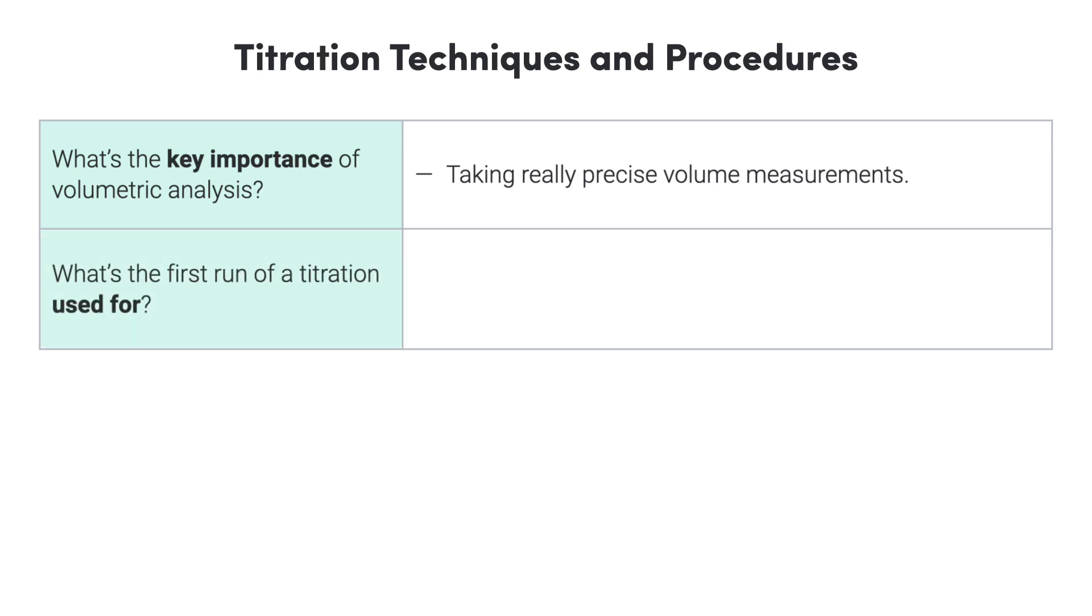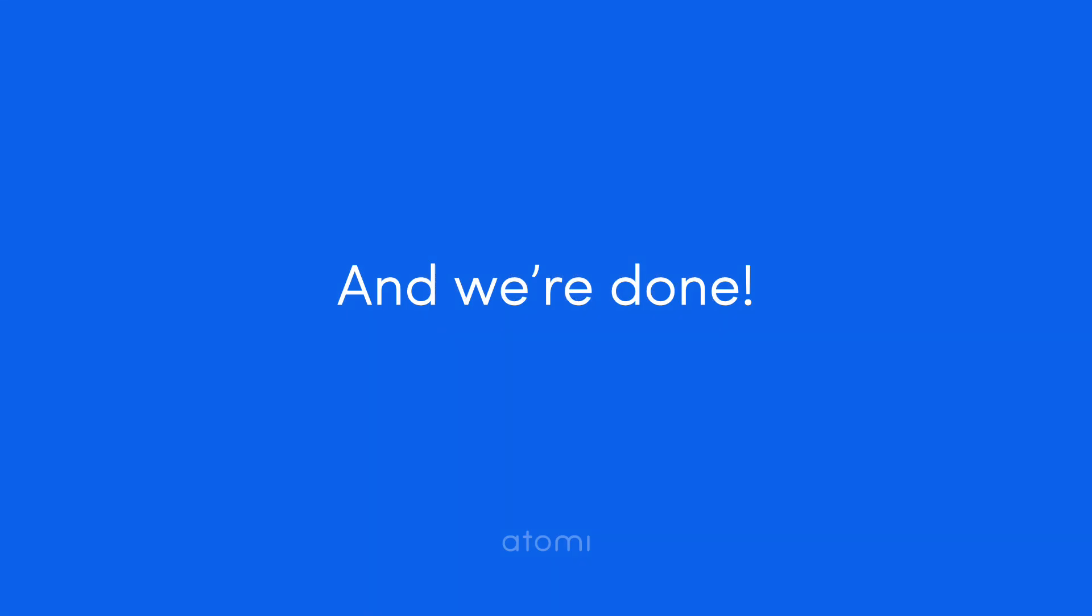Next, what's the first run of a titration used for? Our titration procedure involves a rough first run, which offers an estimate of the amount of titrant required to reach the equivalence point, which we then use to guide our three precise runs of the procedure, which require patience and care to gain a really precise measurement of the volume of titrant required to reach the equivalence point. See you next time!